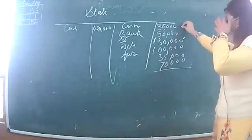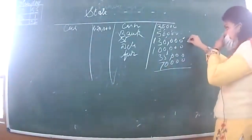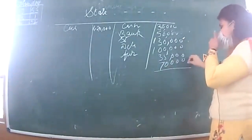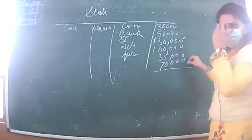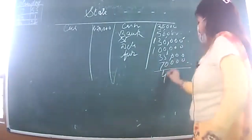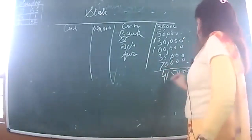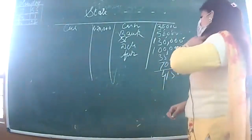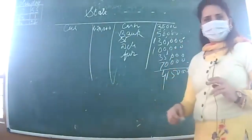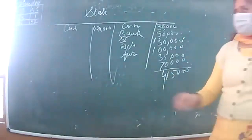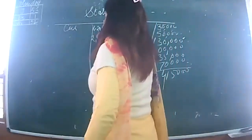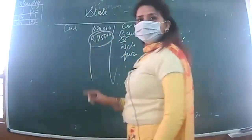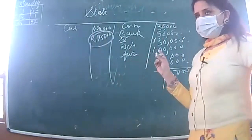Total assets: 50 + 30 = 80, then adding 1,30,000 and 1,00,000 and 35,000 and BR 70,000 - total assets come to 4,15,000. After deducting liabilities of 1,20,000, closing capital is 2,95,000.